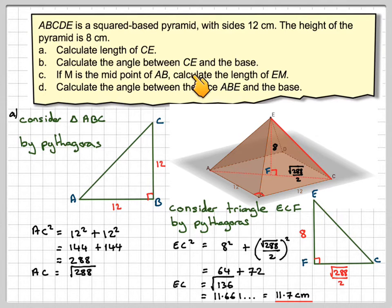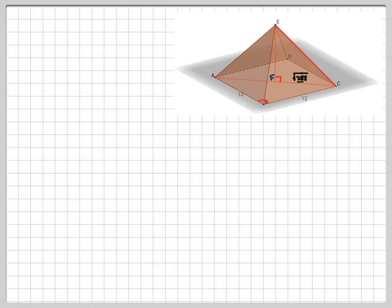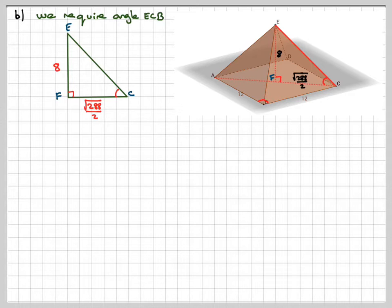Now I need to calculate the angle between CE and the base. So that's going to be that angle here. So again, drawing out that triangle. You probably wouldn't draw it out again because you've just drawn it out in the previous part. So this is the angle that we need to calculate.